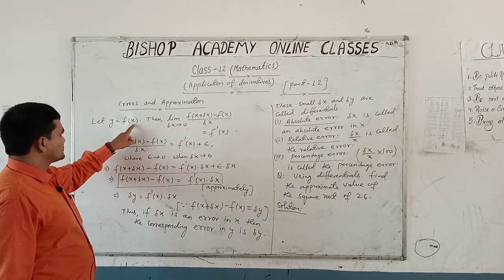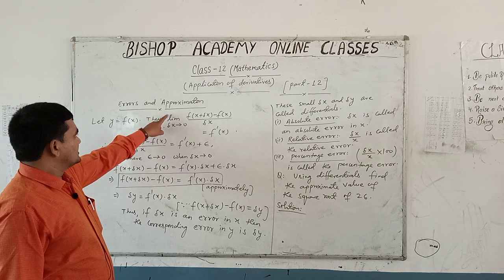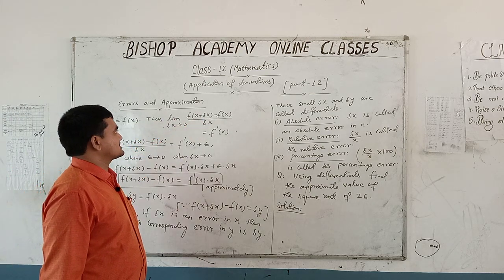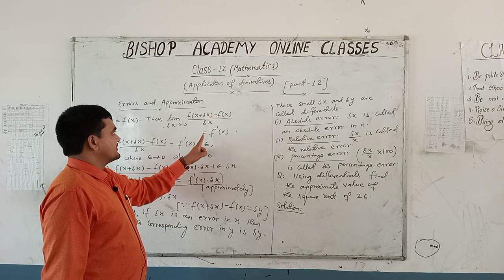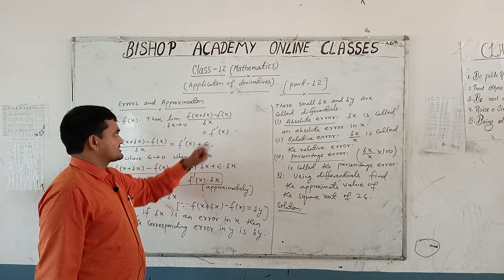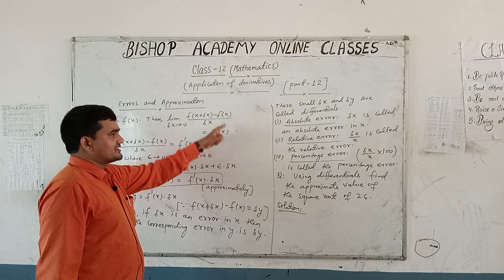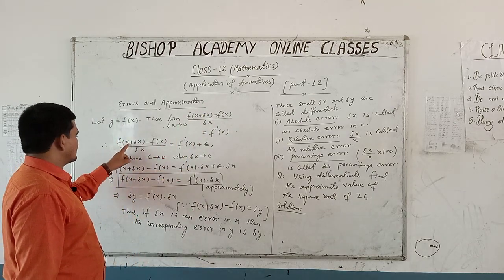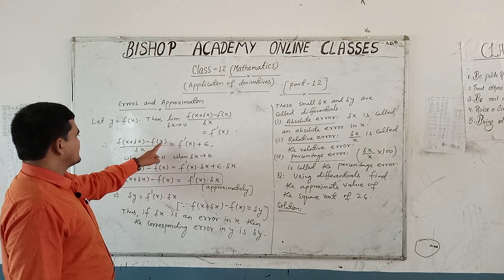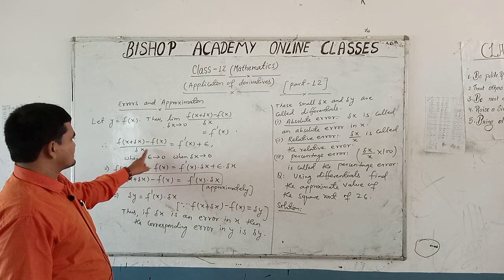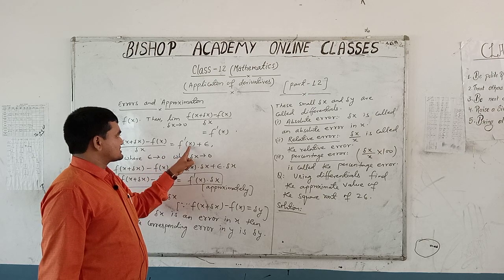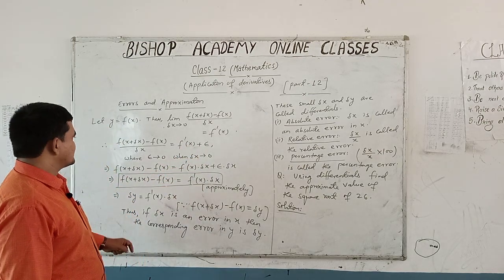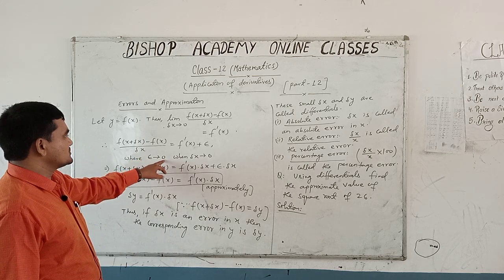Let y equal to f(x). Then, by the limit definition, as delta x tends to 0, f(x + delta x) minus f(x) upon delta x equals f'(x). This can be written by the first principle. Therefore, f(x + delta x) minus f(x) upon delta x equals f'(x) plus epsilon, where epsilon is a very small quantity.